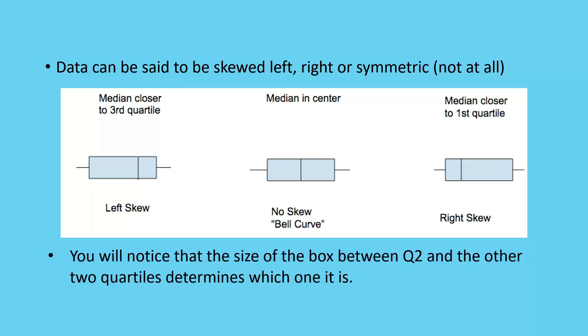So you will notice the size of the box between Q2 and the other two quartiles determines which one this is.